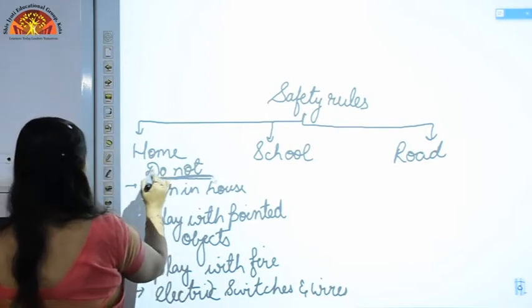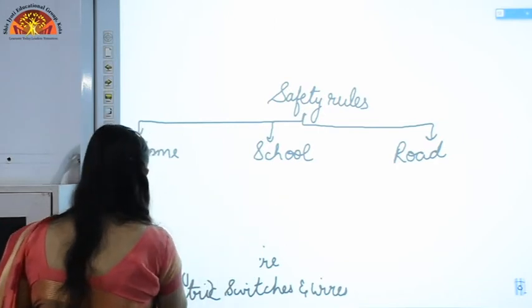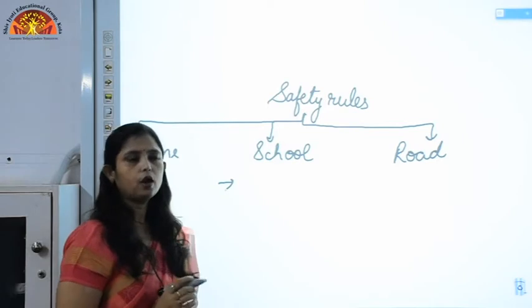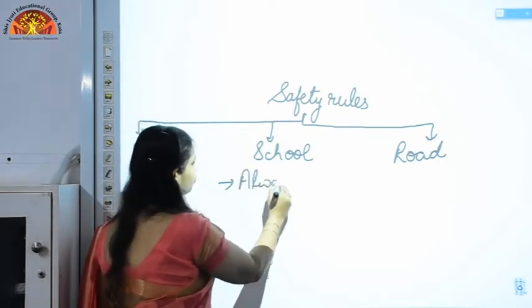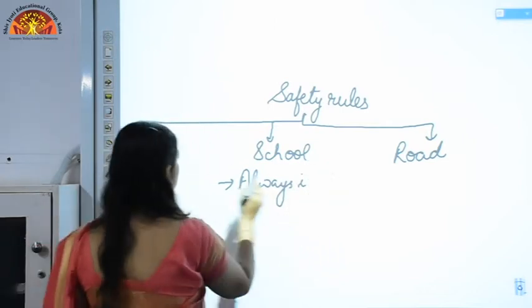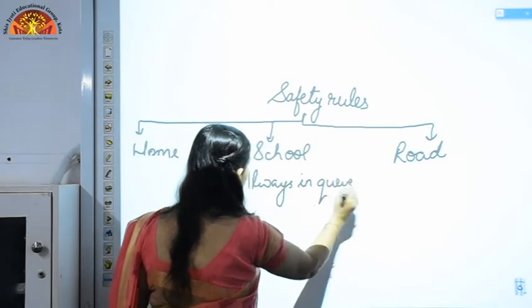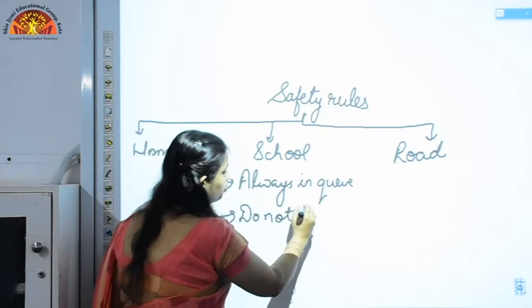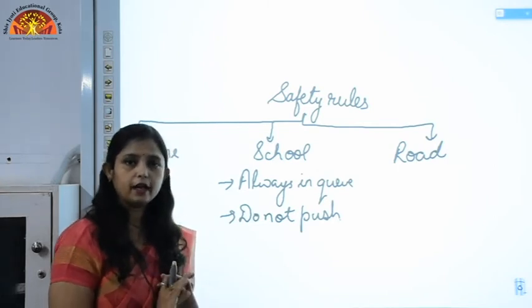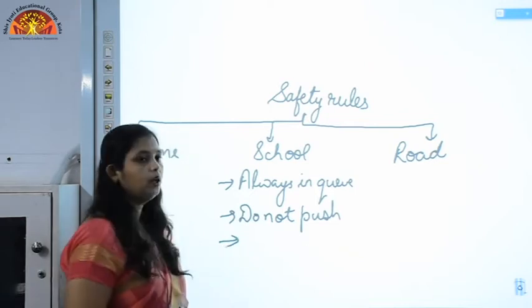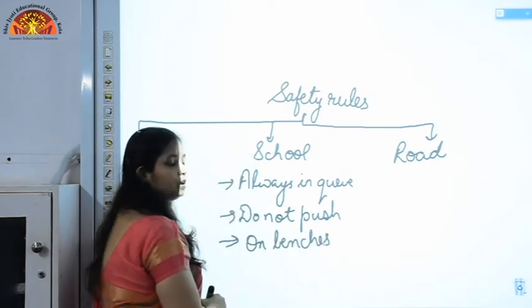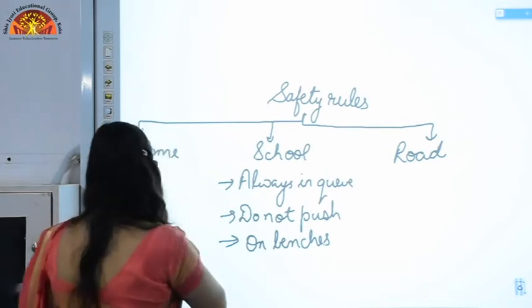Now we move to safety rules to be followed in school. Whenever you are in school, the most important thing is that you always walk in a queue and always stand in a queue. Do not push each other — whether you are moving through the stairs or playing on the swings. And do not climb on benches.